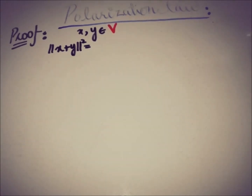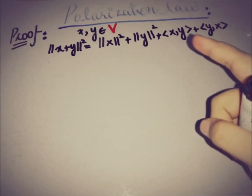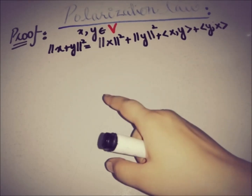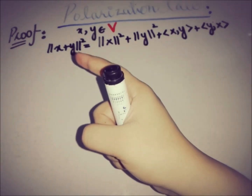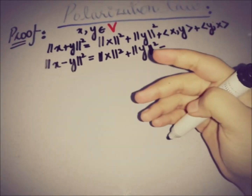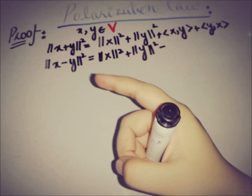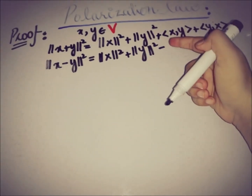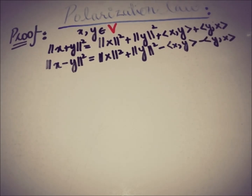Expanding x plus y norm squared gives: norm of x squared plus norm of y squared plus the inner product of x and y plus the inner product of y and x. If we replace y with minus y, we get: norm of x squared plus norm of y squared, minus the inner product of x and y, minus the inner product of y and x.